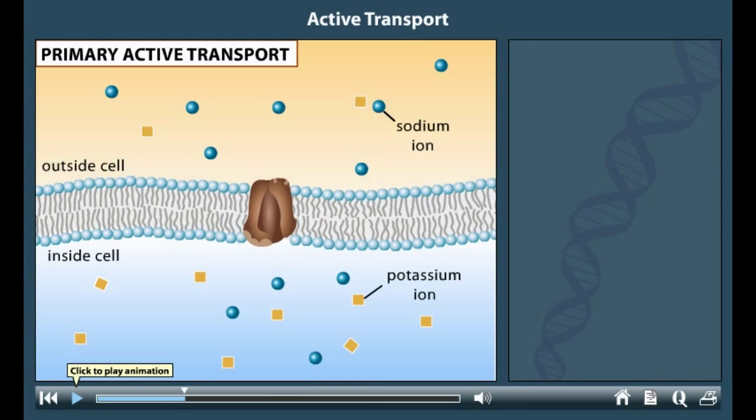Generally, one would expect such concentration gradients to dissipate, with a net flow of ions moving from a higher concentration on one side of the membrane to a lower concentration on the other. However, a membrane protein called the sodium-potassium pump keeps the ion gradients intact.